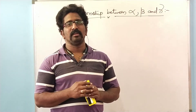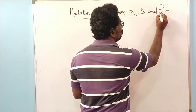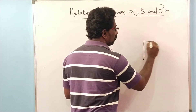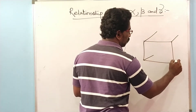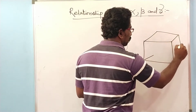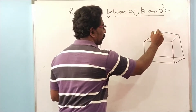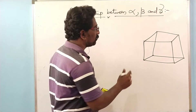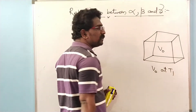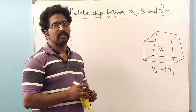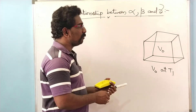To derive this relationship, let me consider one particular cube which has got a volume of V-naught at temperature T1. This means the initial volume of this cube is V-naught at temperature T1. In the same way, let the area of each face of the cube be denoted by A-naught, which is also the initial area at temperature T1.